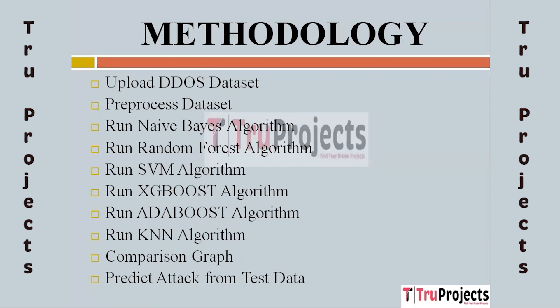The third module is Run Naive Bayes Algorithm. Using this module we will input 80 percent train data to the Naive Bayes algorithm to train a model, and this model will be applied on test data to calculate prediction accuracy. The next modules include Random Forest, Run SVM, Run XGBoost, Run AdaBoost, and Run KNN algorithms. Similarly, we will train all these models and apply them on test data to calculate prediction accuracy. The next module is the Comparison Graph, which displays a comparison table and graph of all algorithms.